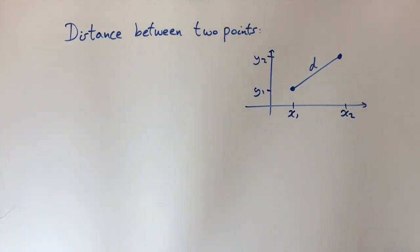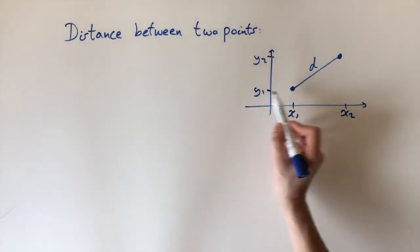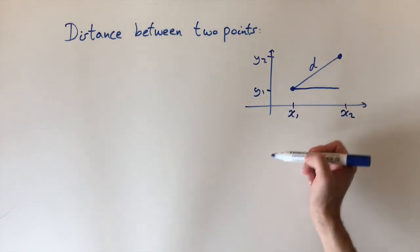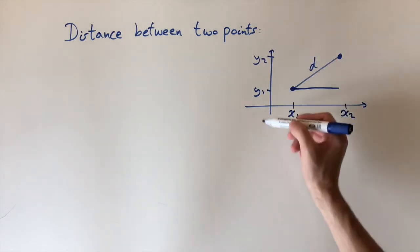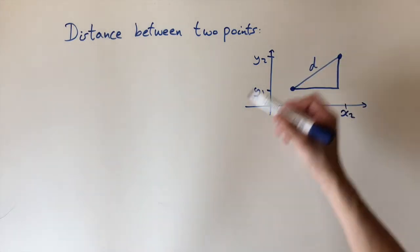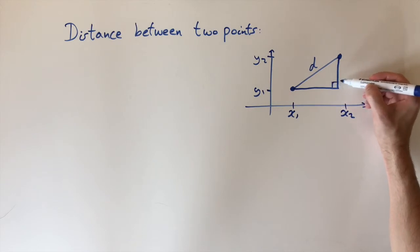And essentially it's going to come down to Pythagoras' theorem because what we can do is draw a horizontal line that's parallel to the x-axis like this, and we can also draw a vertical line that's parallel to the y-axis. Drop it down from the second point. And now this creates a right-angled triangle. These two lines are perpendicular.